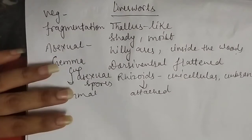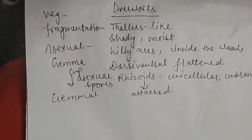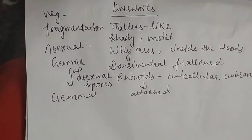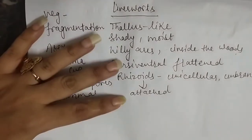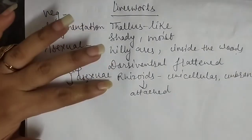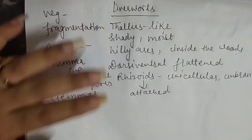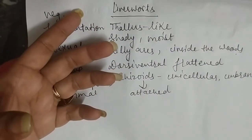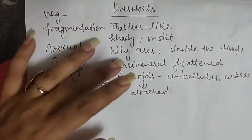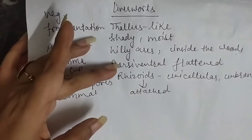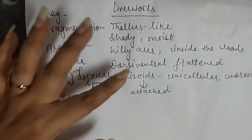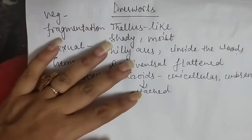These are the two things: vegetative reproduction and asexual reproduction. Sexual reproduction is the same as shown in the previous video. Antheridium and archegonium are the male and female reproductive organs. In liverworts, both can be present on one thallus — meaning a bisexual or monoecious condition — or they can be on different thalli, with separate male and female thalli, which is the dioecious condition.